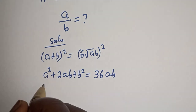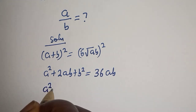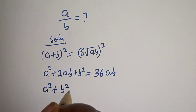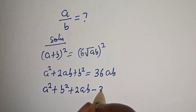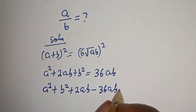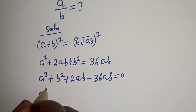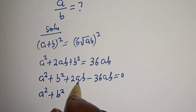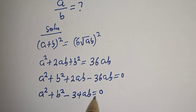Here we have A squared plus B squared plus 2AB. Let's bring the 36AB to this side, so minus 36AB is equal to 0. Now we have A squared plus B squared, and 2AB minus 36AB gives minus 34AB, equal to 0.